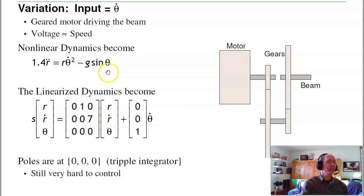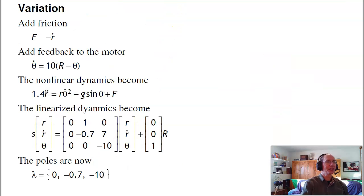If my input is velocity, the dynamics become as follows. Here's my input velocity of the beam. I have a fast motor spinning. I now get poles at 0, 0, 0—a triple integrator. This is still really hard to control. If I were to add friction, say instead of the ball rolling on a metal plate, make it spongy rubber so the force is proportional to -velocity. Add feedback to the motor so that instead of controlling velocity, I'm controlling position. Very quickly, it'll snap to a position. I now have the following dynamics.